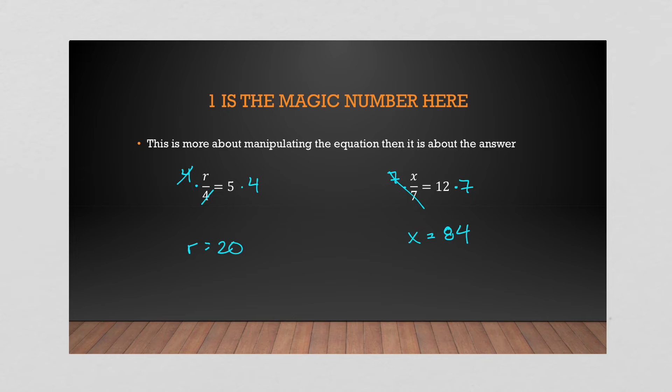So when you are multiplying, right, when you're multiplying with a variable, you divide to get rid of it. And when you are dividing with the variable, you multiply it to get rid of it. You're doing the opposite operation.